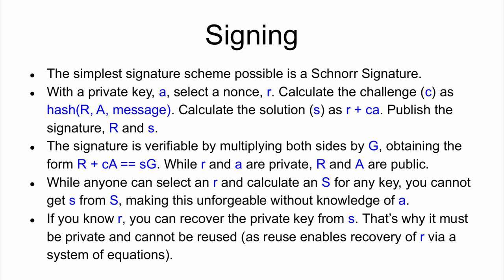The simplest possible scheme is known as a Schnorr signature, and it was actually patented for a while. With the private key — which we're now calling 'a' — you select a nonce R. This nonce is supposed to be randomly generated and can only be used once. You take what you're signing — generally a message — and hash your nonce as a public key, which is hashed into something known as the challenge. Finally, you calculate a solution S, which is the nonce plus the challenge times your private key, and the signature is R and S.